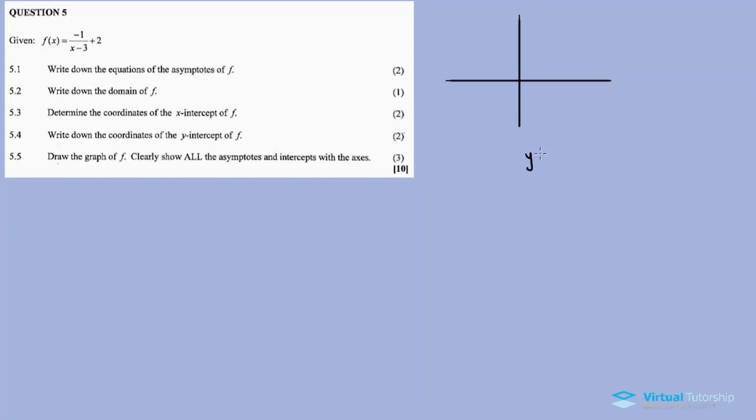Just a brief discussion on hyperbolic functions before answering the question. The form is a over (x minus P) plus Q, where P and Q represent the asymptotes, and a tells us about the shape of the graph.